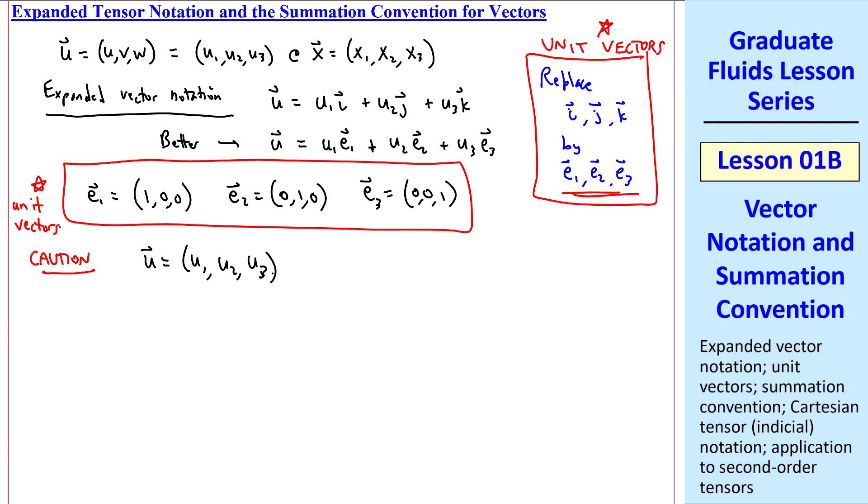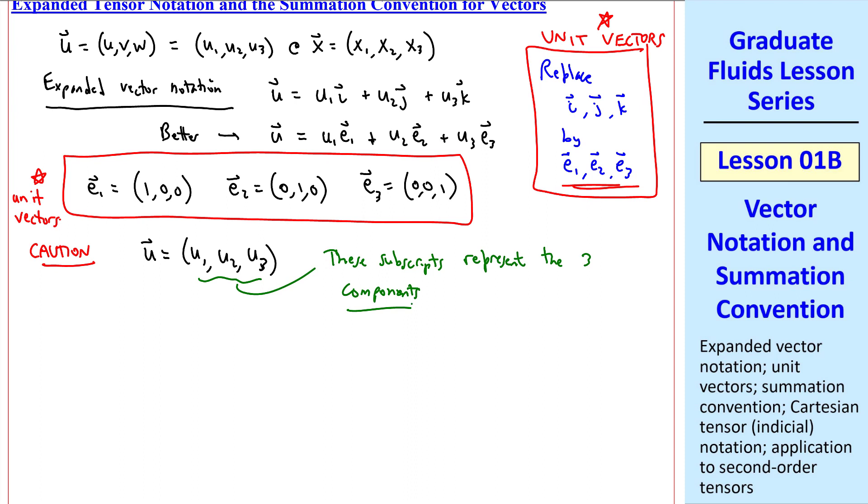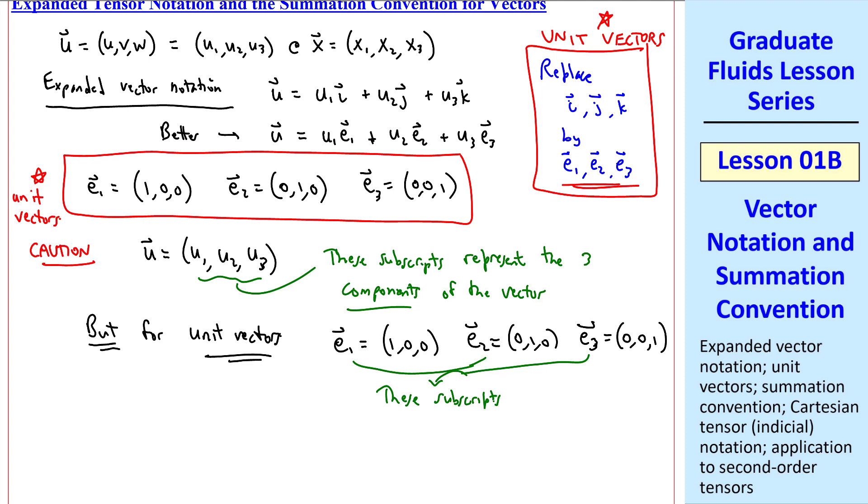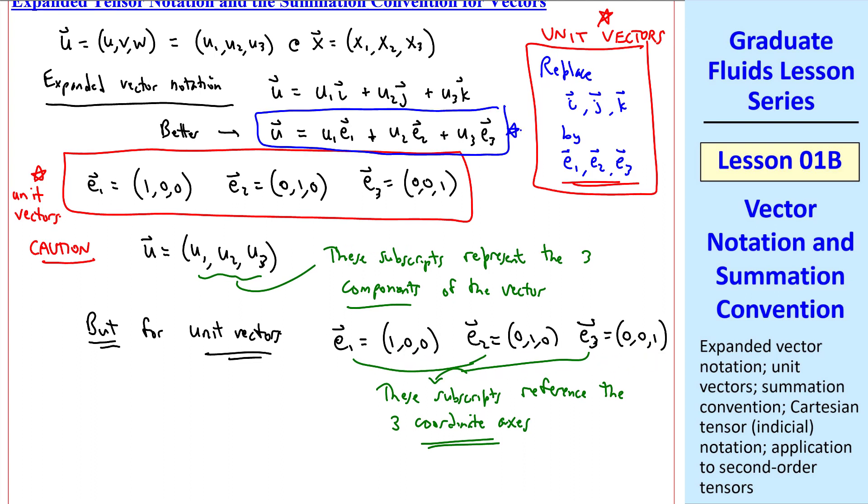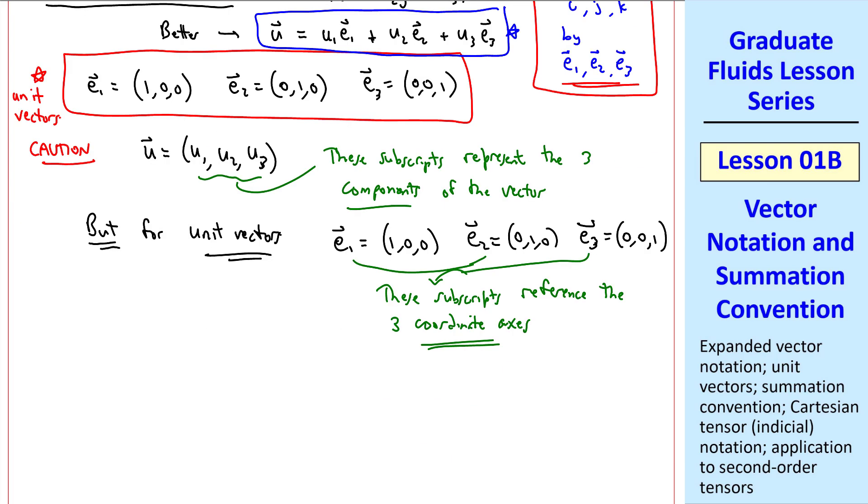One caution here. When we write a vector like the velocity vector as u1, u2, u3, these subscripts represent the three components of the vector. But for unit vectors, these subscripts do not represent the three components. Rather, they reference the three coordinate axes. In other words, these are not components of a vector. These unit vectors are vectors themselves, given by these three components of each one.